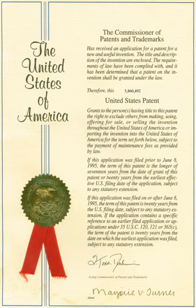Drawings illustrating the invention may also be provided. The application also includes one or more claims that define what a patent covers or the scope of protection. After filing, an application is often referred to as a patent pending. While this term does not confer legal protection, and a patent cannot be enforced until granted, it serves to provide warning to potential infringers that if the patent is issued, they may be liable for damages.